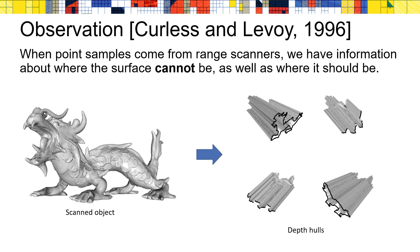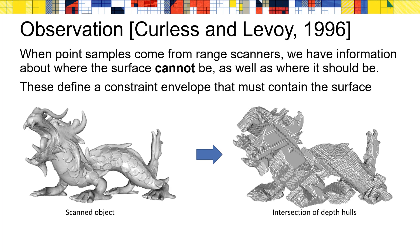To address this problem, we leverage an observation made by Curliss and Lavoie in their implementation of VRIP. When we have data coming from range scans, we not only know where we would like the surface to be, we also know where it cannot be. For example, computing the generalized cone leaving the camera's pinhole and going through the silhouette of a depth map, one obtains a visual hull which must contain the true surface. Assuming that the surface is opaque, one can further carve out the line segments between the camera's pinhole and the range scan to obtain the depth hull. Computing the intersections of these hulls gives an envelope that can be used to constrain where the reconstructed surface must lie.